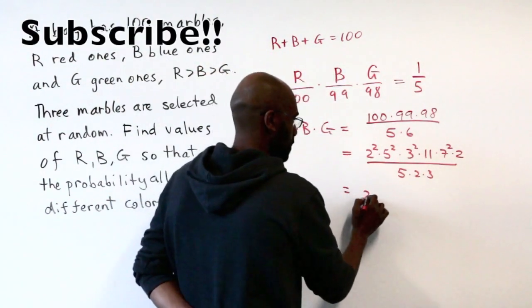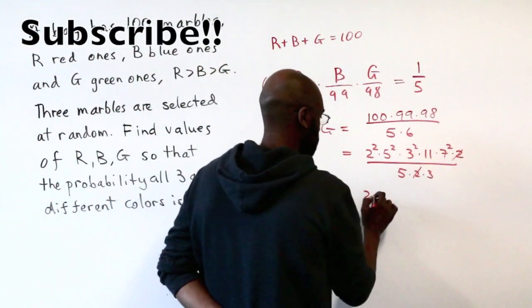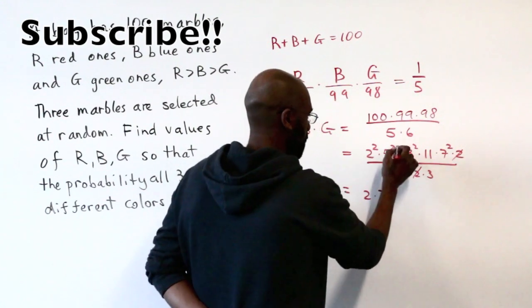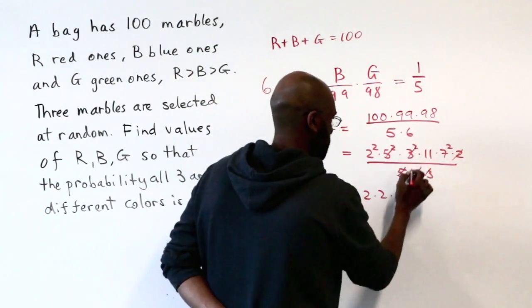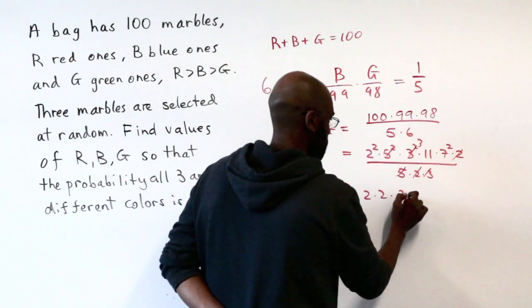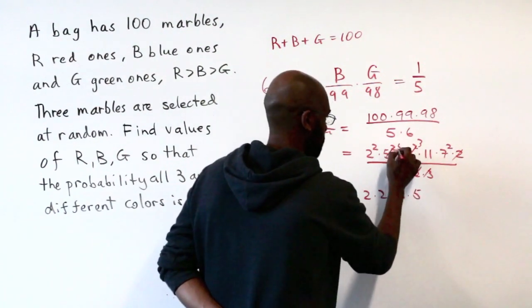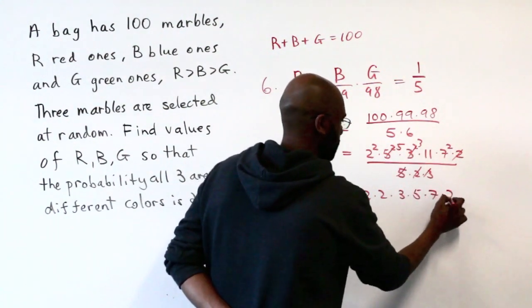Giving us two copies of 2, a copy of 3, a copy of 5, two copies of 7, and an 11.